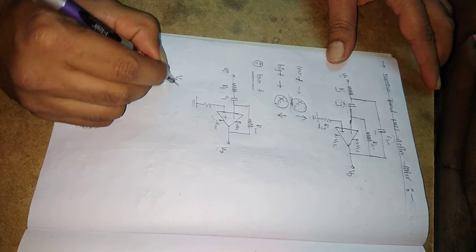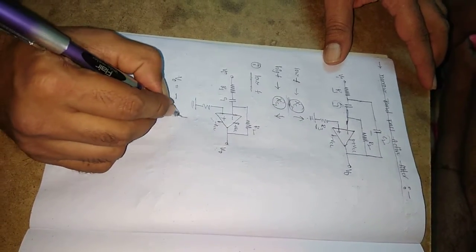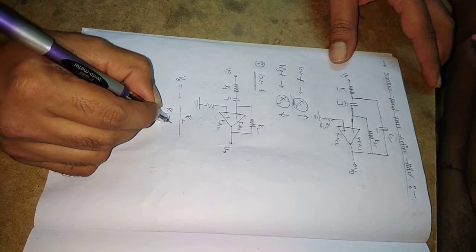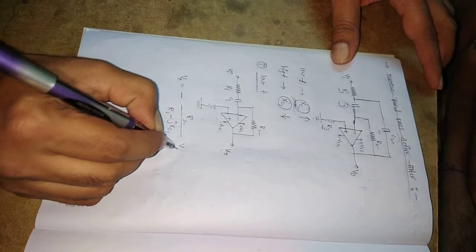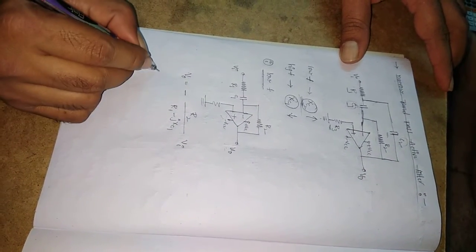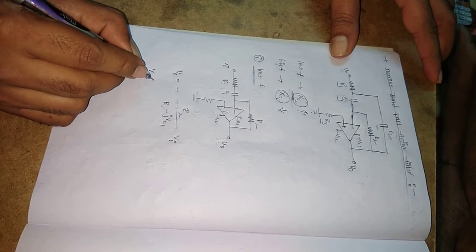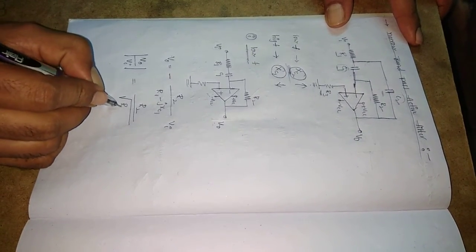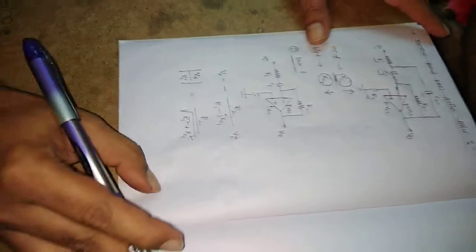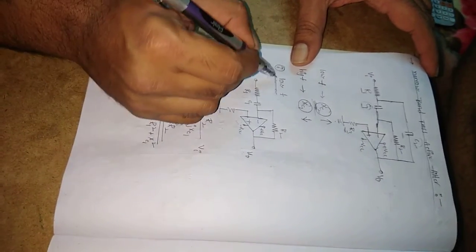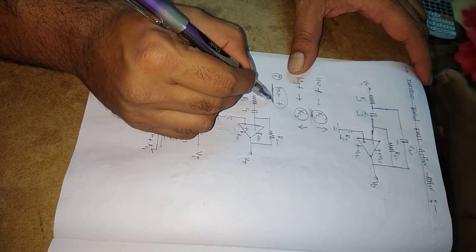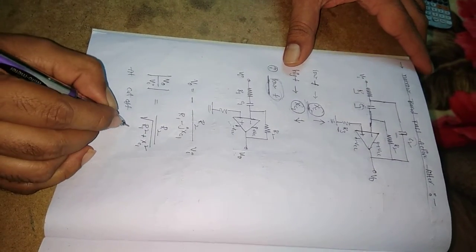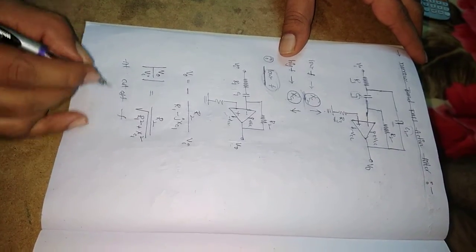The series impedance is R1 in series with minus j·X_C1, multiplied by the input voltage V_I. The voltage gain is V_out / V_in. Taking the magnitude, it becomes R2 divided by the square root of (R1² + X_C1²). At the lower cutoff frequency, X_C1 is equivalent to R1.